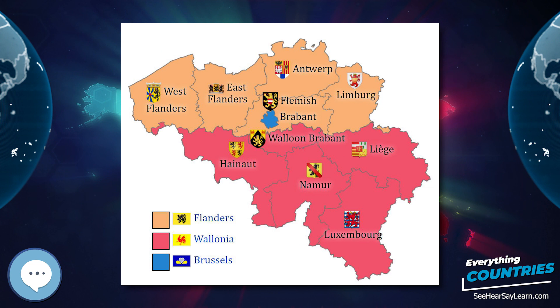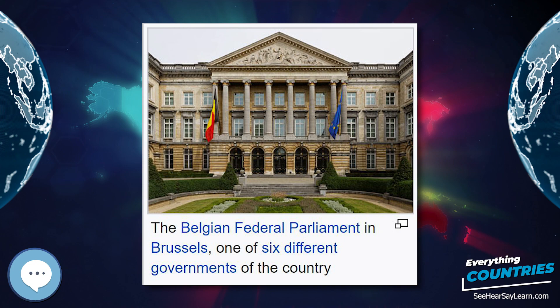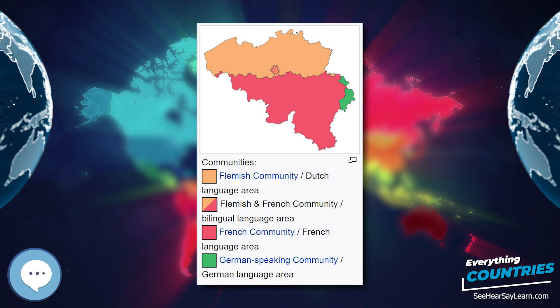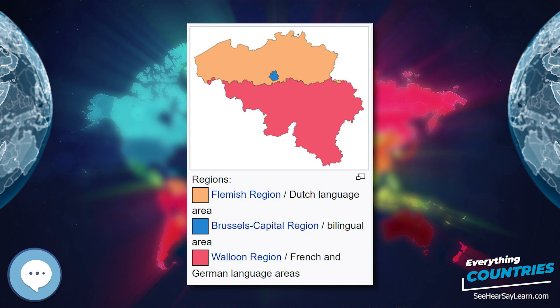Kim Clijsters and Justine Henin both were ranked the number one female tennis player and won Player of the Year in the Women's Tennis Association. The Spa-Francorchamps motor racing circuit hosts the Formula One World Championship Belgian Grand Prix. Belgian driver Jacky Ickx won eight Grands Prix, six 24 Hours of Le Mans, and finished twice as runner-up in the Formula One World Championship. Sporting events annually held in Belgium include the Memorial Van Damme Athletics Competition, the Belgian Grand Prix Formula One, and classic cycle races such as the Tour of Flanders and Liège–Bastogne–Liège. The 1920 Summer Olympics were held in Antwerp.